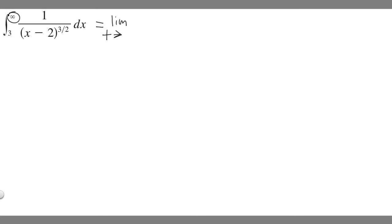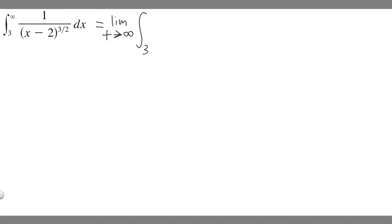So what you want to do if you have an infinity is say as t approaches infinity. If it's negative infinity, just write negative infinity — sometimes you'll have both, but that's handled differently. For now, just say as t approaches whatever bound you have. So we can say the limit as t approaches infinity, from 3 to t of 1 over x minus 2 to the 3/2 dx.